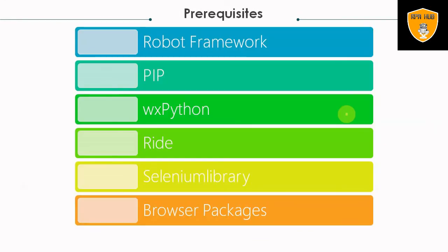Prerequisites for using Robot Framework include installing Robot Framework, pip, wxPython, RIDE, Selenium Library, and browser packages. In the next sessions we will discuss how to install these on your system, and I will show a practical demo of the complete installation steps. If you like this session, consider subscribing and pressing the bell icon for more updates. Thank you for watching.